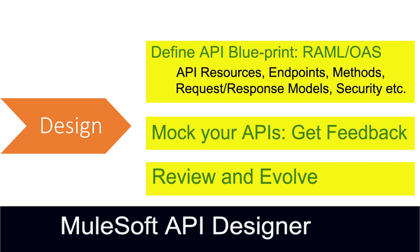We need to specify each and everything clearly when creating the blueprint, either in the form of RAML or OpenAPI specifications. We need to be very clear about what kind of request and response models, HTTP status codes, endpoints, associated methods, and security schemes we will be using. Based on that, we create proper documentation of our API, get developer feedback, keep evolving, and finally come up with a proper structured OpenAPI or RAML specification.